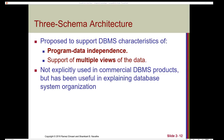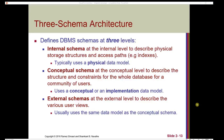When we're communicating about the representation of data in a database, we often talk about a three-schema architecture. While it's not explicitly used in commercial DBMS products, it has been useful in explaining database system organization. It's been proposed to support program-data independence and multiple views of the data. The three-schema architecture defines DBMS schemas at three levels: the internal schema defines physical storage structures and access paths using a physical data model; the conceptual schema describes the structure and constraints for the whole database for a community of users; and the external schema describes the various user views.